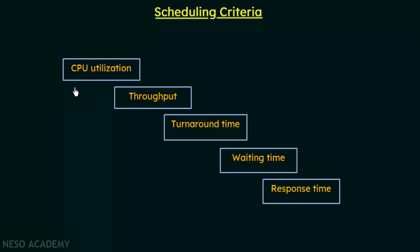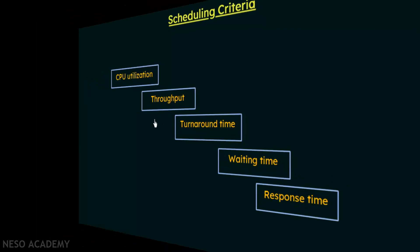The five criteria are: CPU utilization, throughput, turnaround time, waiting time, and response time. These terms may seem new or familiar, but we are going to analyze them one by one, seeing what they mean and how they are described in terms of scheduling criteria.